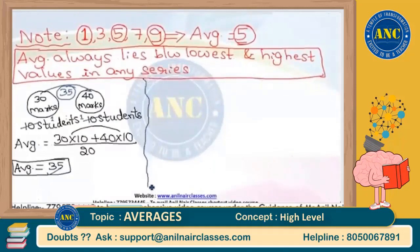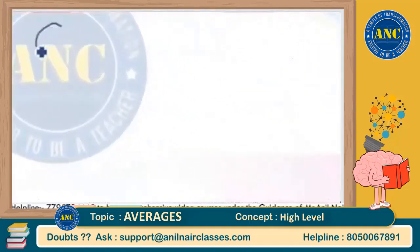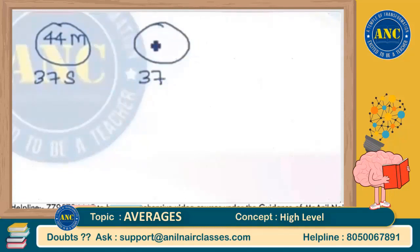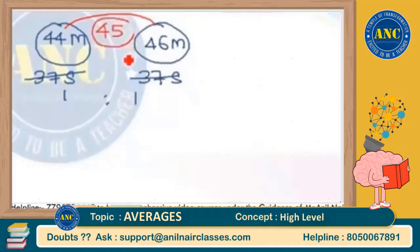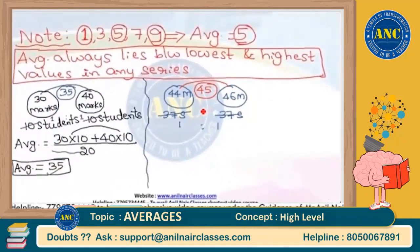One more example: suppose section A has an average of 44 marks with 37 students, and section B also has 37 students with an average of 46 marks. Instead of doing all the calculation, since the number of students is in the ratio 1 is to 1 — equal ratio — I can directly say 44 plus 46 by 2 equals 90 by 2 equals 45. The middle value of 44 and 46 is 45. These are the two key points before moving to the original question.